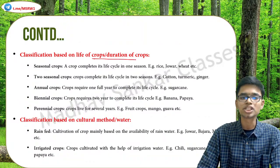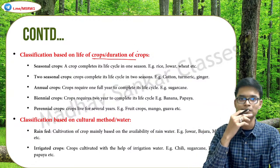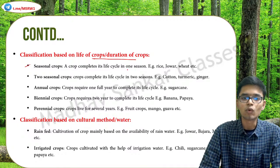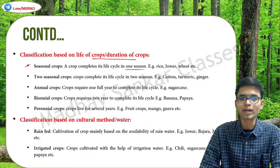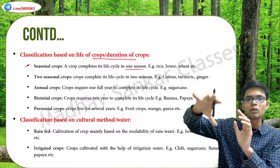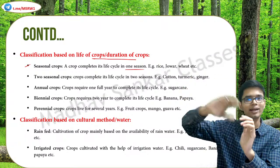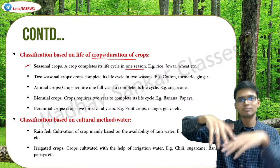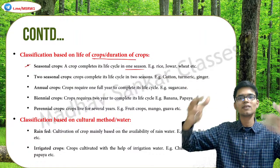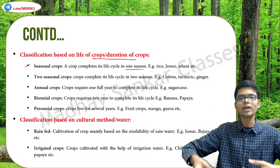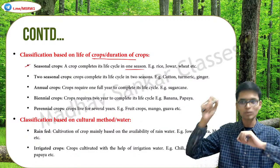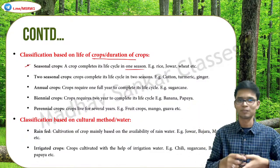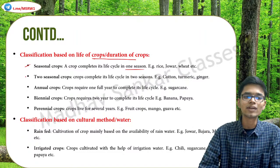Classification based on crop duration: Seasonal crops complete their life cycle in one season — for example, rice. You sow it, it grows, you harvest it — the entire life cycle is completed within one season. That rice plant does not regrow or reflower the next season. You have to sow new seeds again. Such crops are known as seasonal crops.